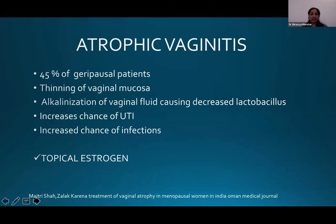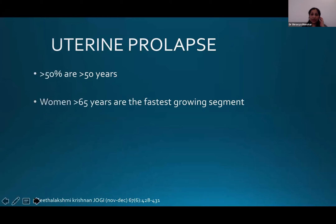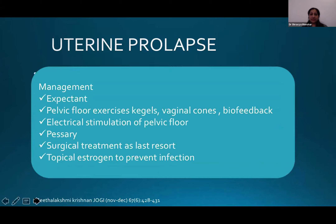Atrophic vaginitis can be sorted with topical oestrogen if appropriate for the patient. Uterine prolapse in the over-65 group is the fastest growing segment currently. Management options include expectant management, pelvic floor exercises, biofeedback, electrical stimulation of the pelvic floor, pessaries, surgical treatment as a last resort, and topical oestrogen to prevent infection.